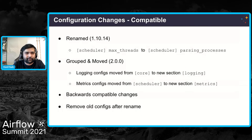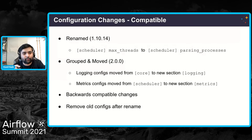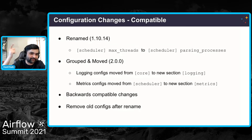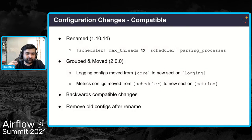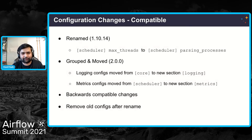Some other configurations were grouped and moved. We were putting all logging configurations in 'core' and metrics in the 'scheduler' section. We have moved them to their own dedicated sections called 'logging' and 'metrics'. This change only happened in 2.0 — they'll keep working but will raise deprecation warnings. Make those changes sooner rather than later. Also, your airflow.cfg should only contain configurations you are overriding — don't put all settings in it, just the ones you want to override.